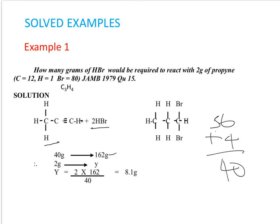We want to find how many grams of hydrogen bromide 2g of propyne will require. So 40 is to 162 as 2g is to Y. Cross multiply: Y is equal to 2 times 162 all over 40. When you multiply and divide through, you have your answer as 8.1g. So 8.1g of hydrogen bromide will be required to react with 2g of propyne.